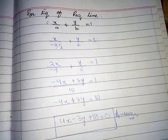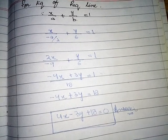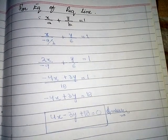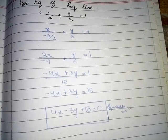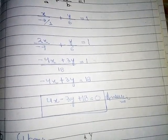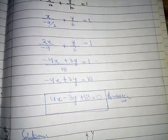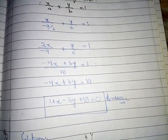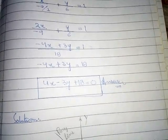For the equation of the required line, we use the intercept form: x/a + y/b = 1. Putting the values: x/(-9/2) + y/6 = 1. Since 2 is in the denominator, this becomes 2x/(-9) + y/6 = 1.